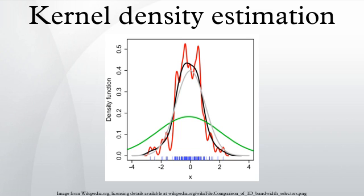In comparison, the red curve is under-smoothed since it contains too many spurious data artifacts arising from using a bandwidth h = 0.05, which is too small. The green curve is over-smoothed since using the bandwidth h = 2 obscures much of the underlying structure. The black curve with a bandwidth of h = 0.337 is considered to be optimally smooth since its density estimate is close to the true density.